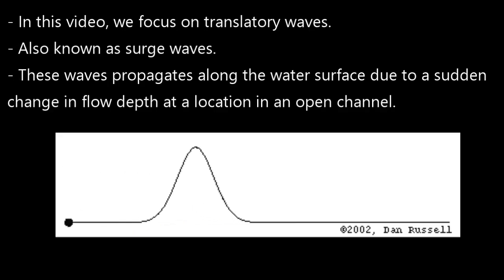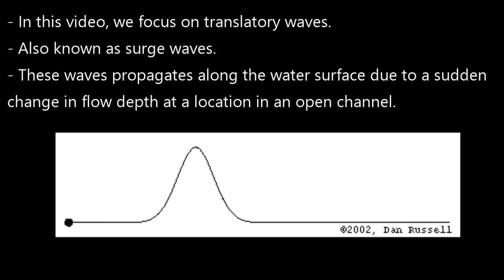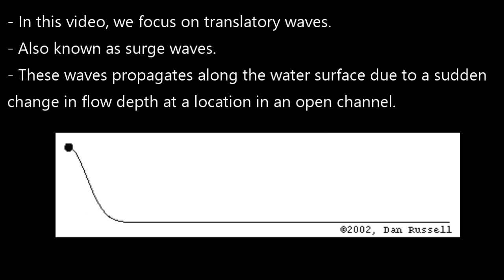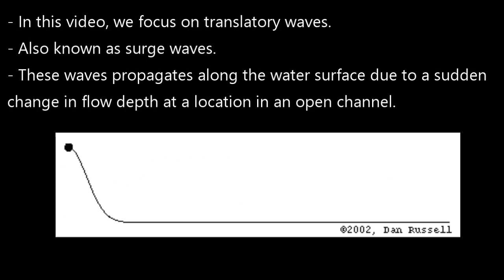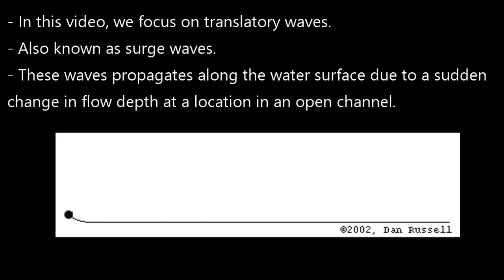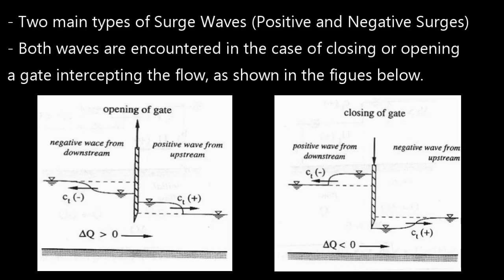In this video we focus on translatory waves, also known as surge waves. These waves propagate along the water surface due to a sudden change in flow depth at a location in an open channel. There are two types of surge waves: positive and negative surge waves. Both waves are encountered in the case of closing or opening a gate intercepting the flow, as shown in the figures below.